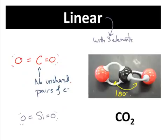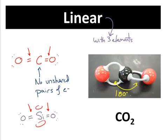Linear, in this case, is CO2. Anytime you have three elements, you have two choices: bent or linear. The reason CO2 is linear and spreads out to 180 degrees — a straight line — is because there is no unshared pair of electrons on the central atom. All the electrons have gone into the bonds. Similarly, silicon dioxide forms two double bonds with oxygen and has zero unshared pairs of electrons around the central atom, so they can spread out to 180 degrees — the maximum distance.